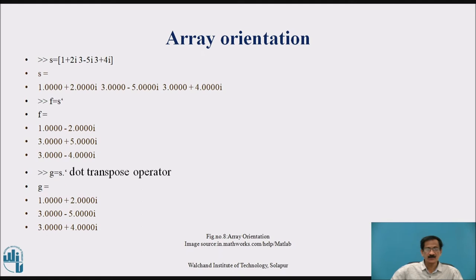Array orientation S is equal to 1 plus 2j minus 5i plus 3 plus 4i will result in S is equal to 1 plus 2j, 3 minus 5j, 3 plus 4j. Star will change their sign as 1 plus 2i will change to 1 minus 2i, then 3 minus 5i will change to 3 plus 5i, then 3 plus 4i will change to 3 minus 4i.